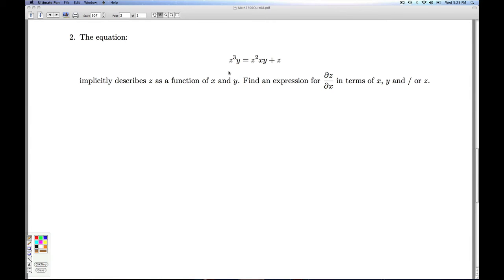Okay, number 2. We're given this crazy, zany equation here. And we're told that it implicitly describes z as a function of x and y. We'll just take their word for it. They want us to find the partial derivative of z with respect to x in terms of x, y, and or z. So this is a consequence of the chain rule.